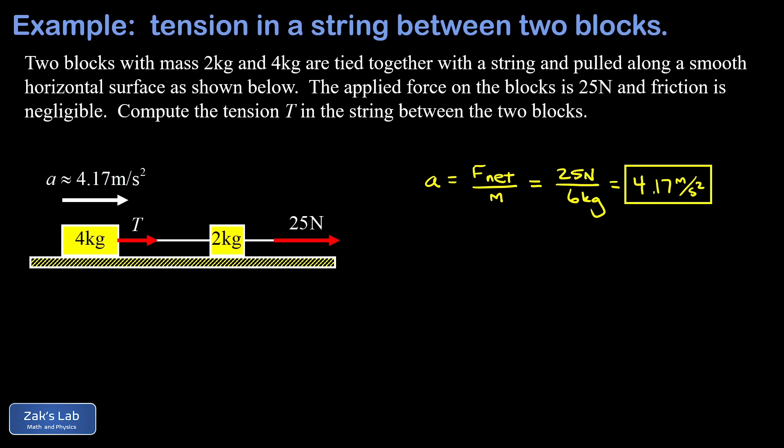Now we apply Newton's second law to this individual 4 kilogram block. So we write F net equals ma for the analysis on the 4 kilogram block. The net force is just the tension pulling to the right, that's the only horizontal force acting on this block.